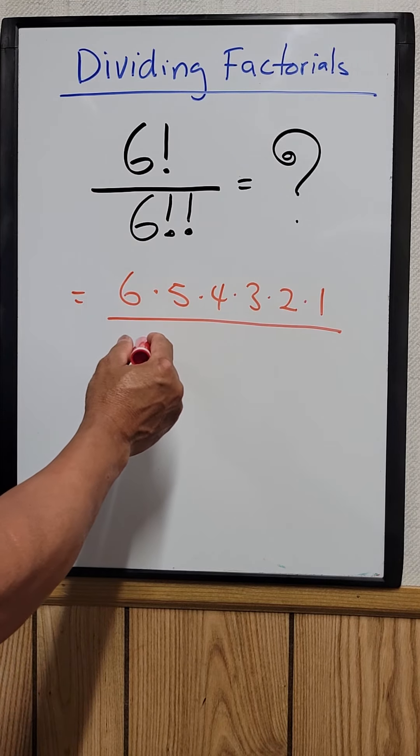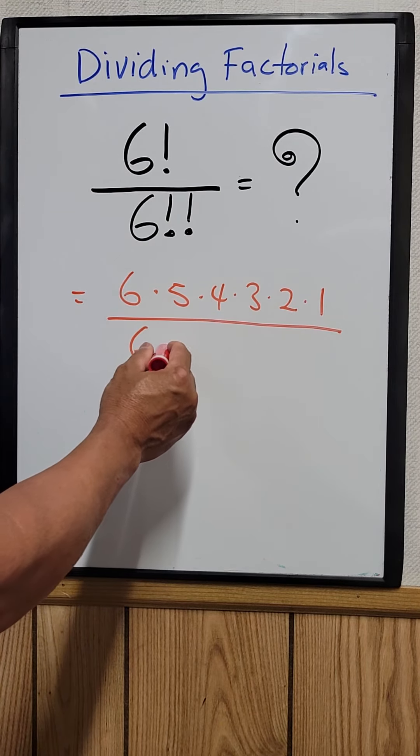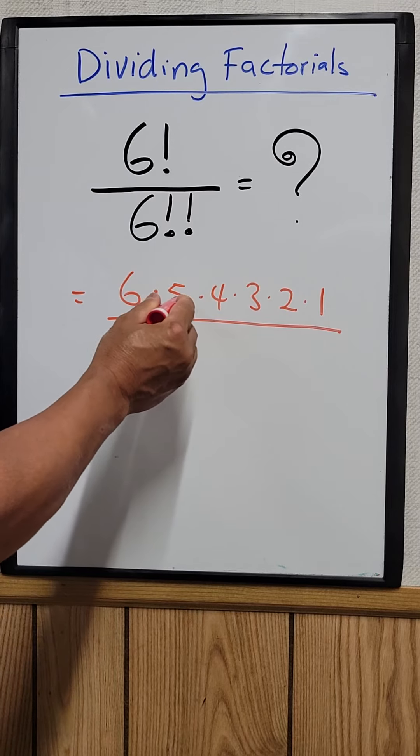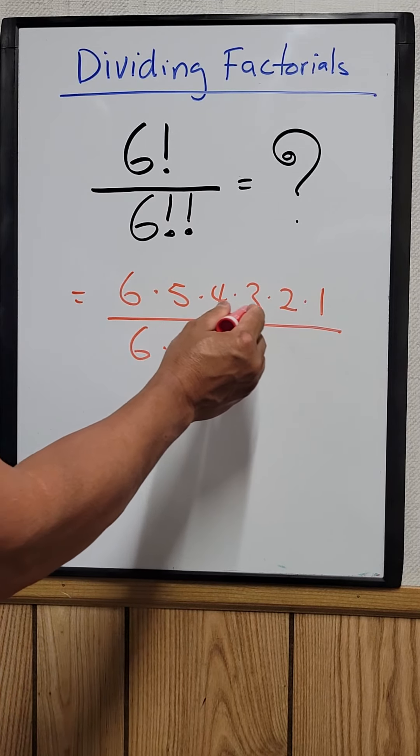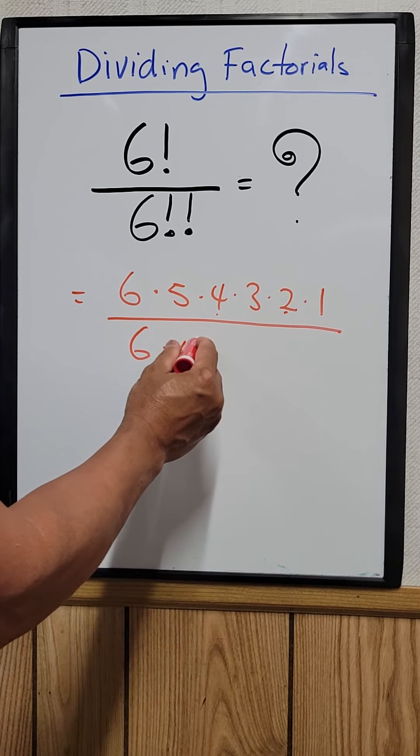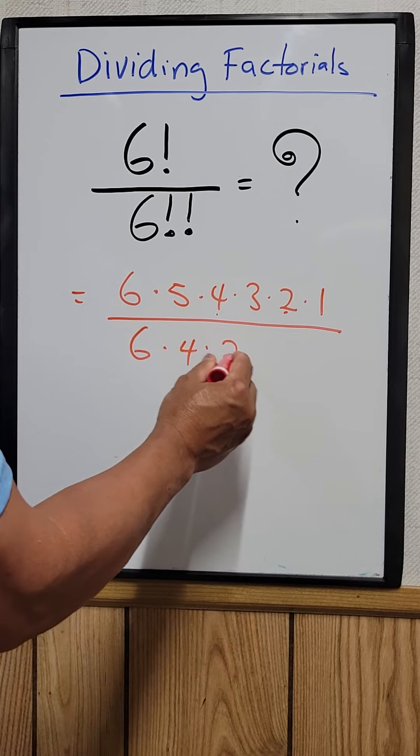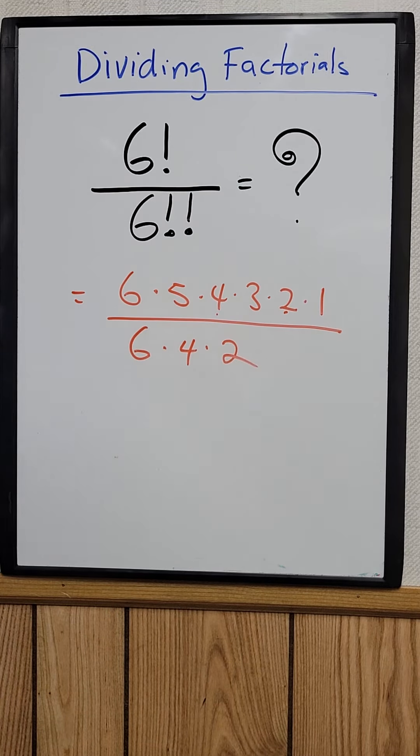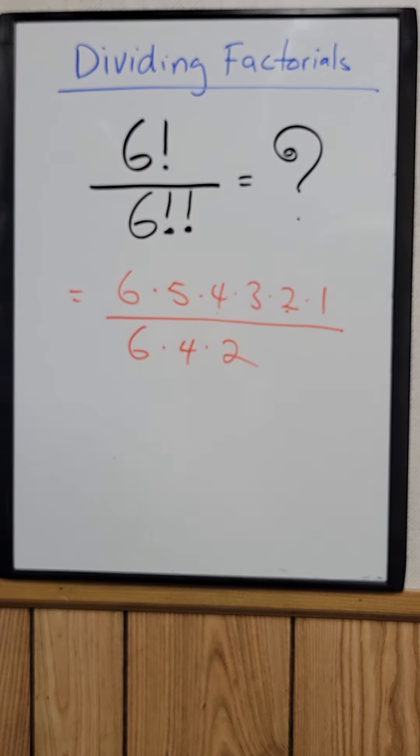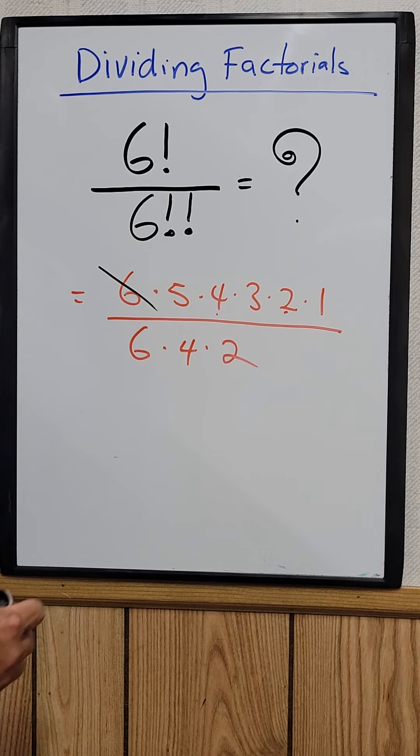factorial, which is equal to 6 times all the even numbers. Look at all the even numbers: will be 4 and 2. So that's what you multiply: 6 times 4 times 2. Okay, so now we can cancel the 6 out.